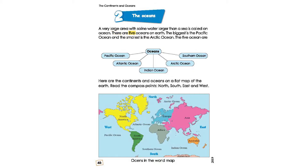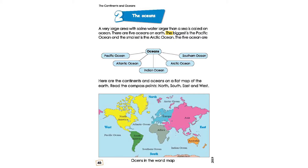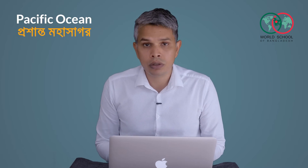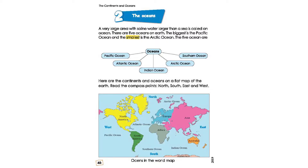There are five oceans on Earth. The biggest is the Pacific Ocean, and the smallest is the Arctic Ocean.